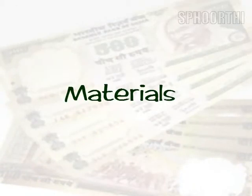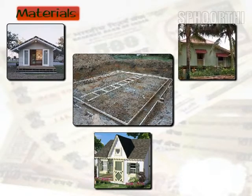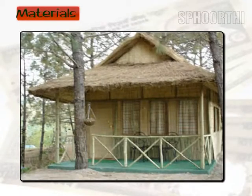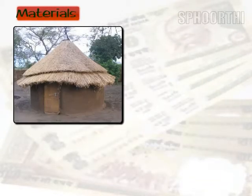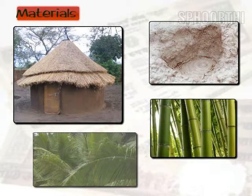Materials: the most important factor is the availability of building materials. In hills, houses are made of wood as many timber trees grow on the mountains. In plains, most houses are made up of brick. Kacha houses or huts are made up of mud, bamboo, and palm leaves.